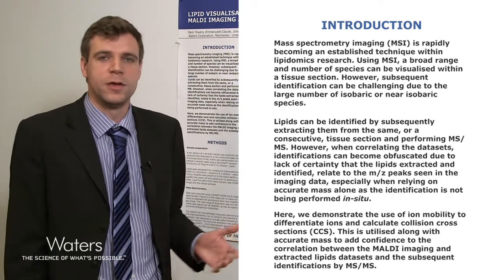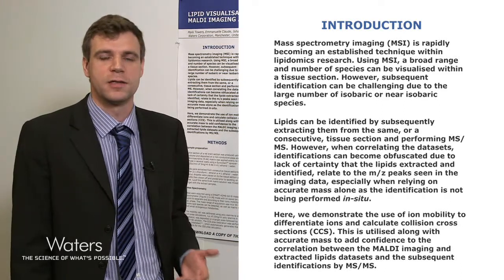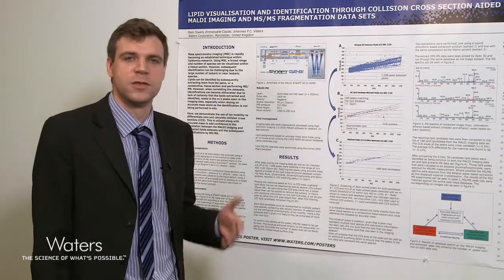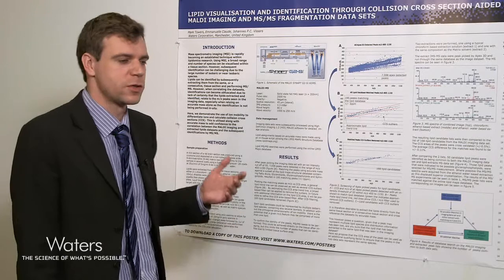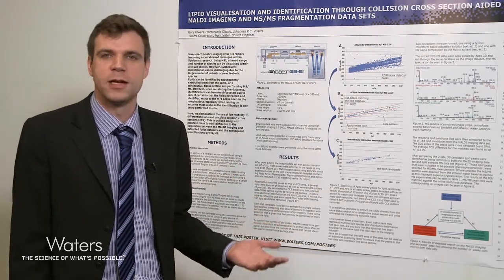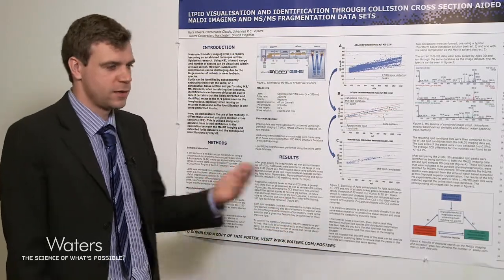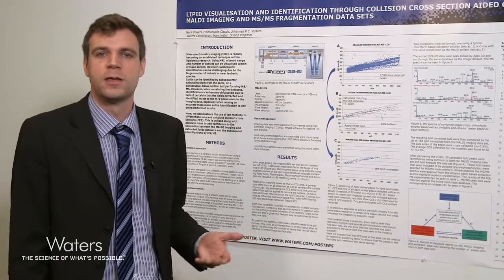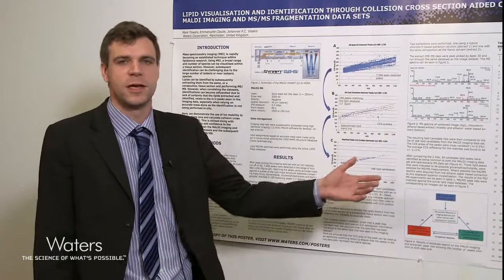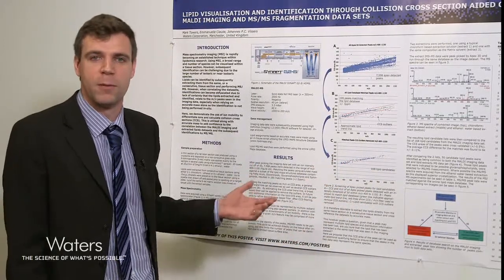Another way is to extract the lipids from the same tissue section or a consecutive tissue section. When you do this, however, there's a certain amount of uncertainty because you've extracted the lipids and removed them from the tissue section where you have your imaging data, so you've lost your distribution information. This means that because there are multiple lipids that could have similar or the same mass, you cannot guarantee that the lipid identified in your subsequent MS/MS is the same as the lipid seen within your imaging data set.